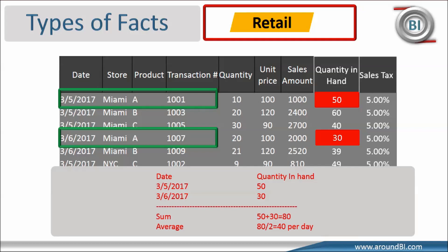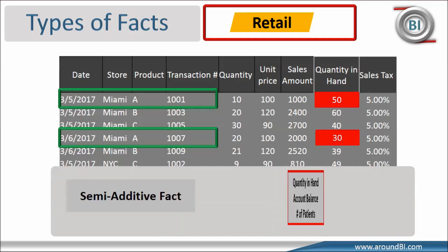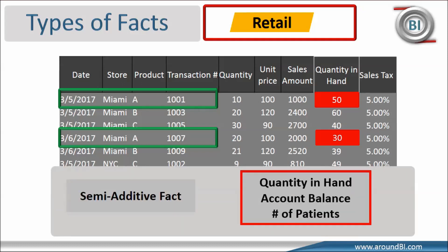Since quantity on hand is additive across some dimensions but not all, we can call it a semi-additive fact. A similar example comes from the banking domain, where a bank statement tells the average balance in an account for certain days. Usually, facts that capture a static level — for example, quantity on hand, bank account balance, or number of patients in a hospital facility — show semi-additive behavior. They are not additive towards dates, but may be additive towards other dimensions.